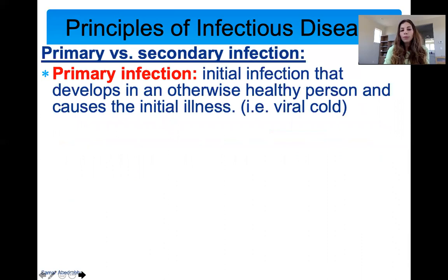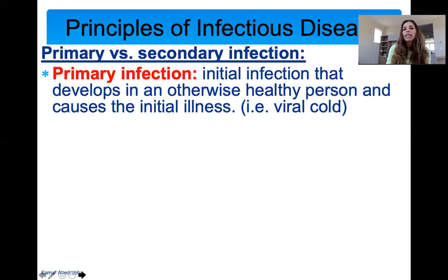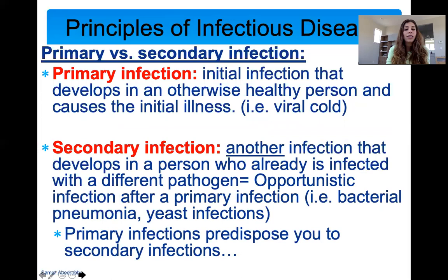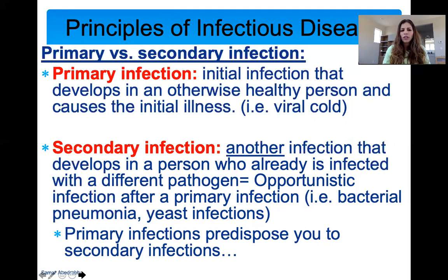A primary infection is the initial infection that develops in a healthy person. A secondary infection is another infection that develops in someone who's already had a primary infection — this is an opportunistic infection, and we see secondary infections all the time in hospitals. A patient comes in for a primary infection and suddenly develops three other infections. UTIs and yeast infections are very common secondary infections. Primary infections predispose you to secondary infections because they make you more immunocompromised — your immune system is already dealing with something and not at full capacity.